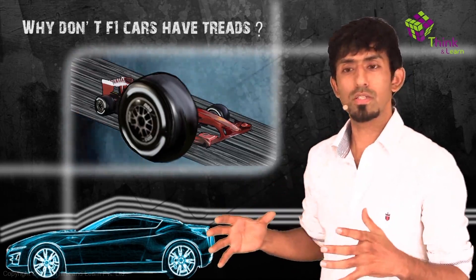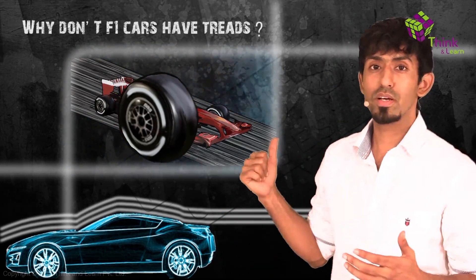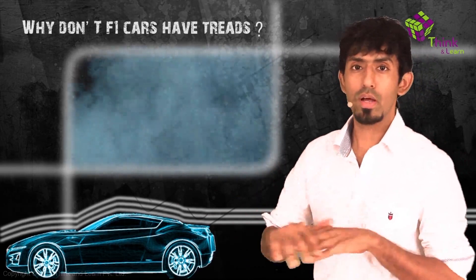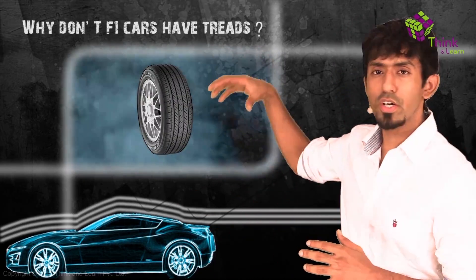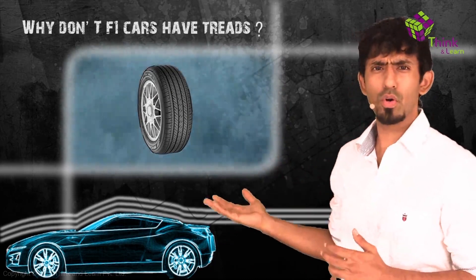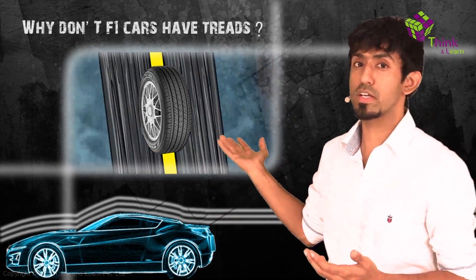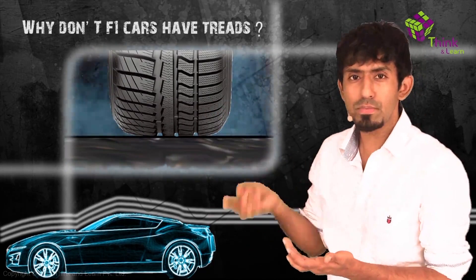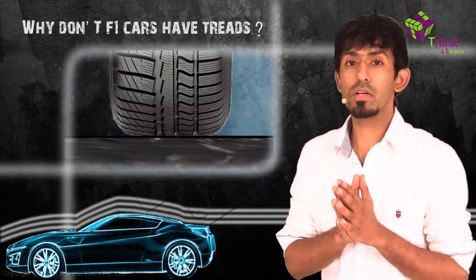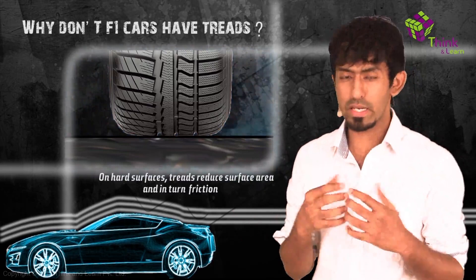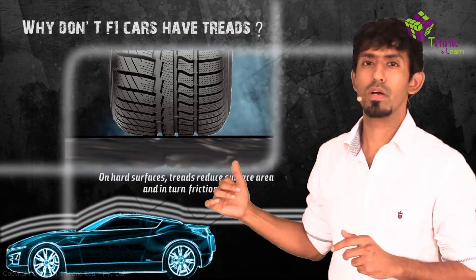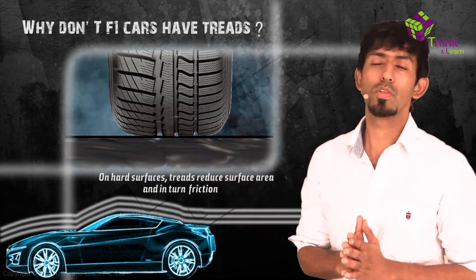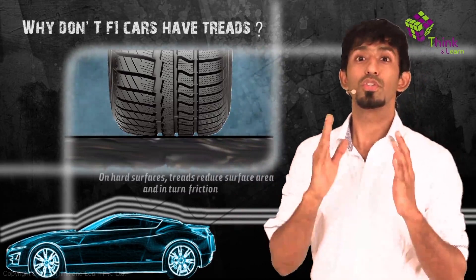How can an F1 car going so fast not skid even without treads? The surprising answer is: those treads don't help much on solid road. On something like clay, treads sink in and grip. But on a hard road, they actually reduce the surface area — parts of the tire touch the road, but parts are in the air in those gaps. Since friction depends on surface area in most practical situations, reducing surface area reduces friction.